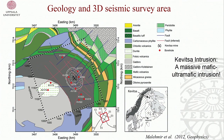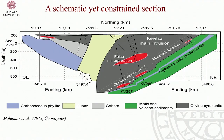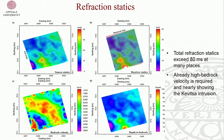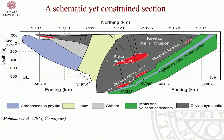The 3D survey area is about 9 square kilometres. Looking at a schematic section down to one kilometre, the Kvitsa intrusion was initially assumed to be a single massive intrusion, but we will see it wasn't. Reaching and disseminated sulphide mineralisation was present, and at some locations massive sulphide was observed in boreholes. Mineralisation within the intrusion is called false mineralisation; at the contact it is contact mineralisation. Both were main targets for the 3D survey.